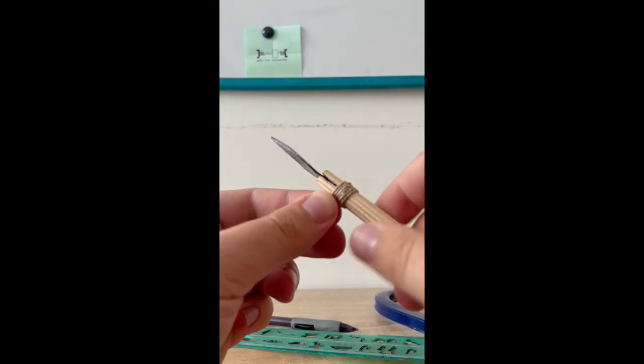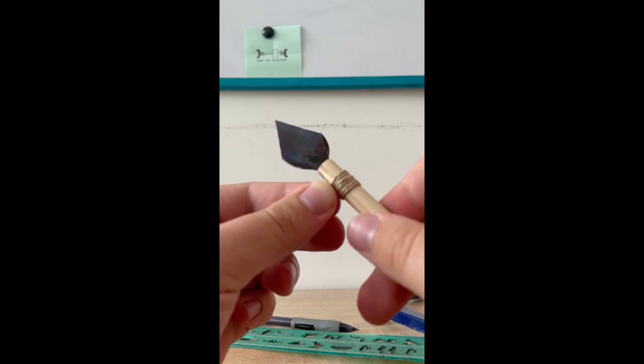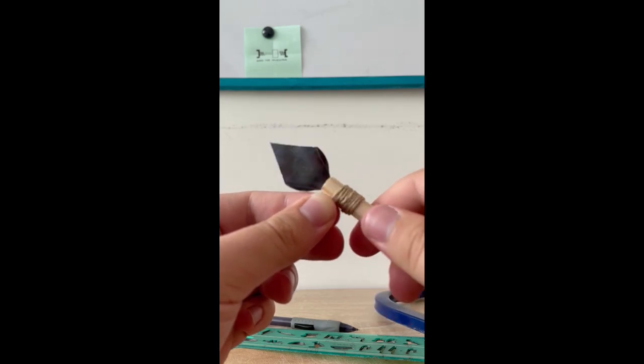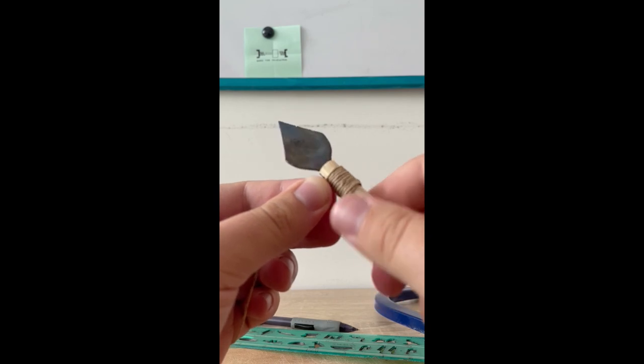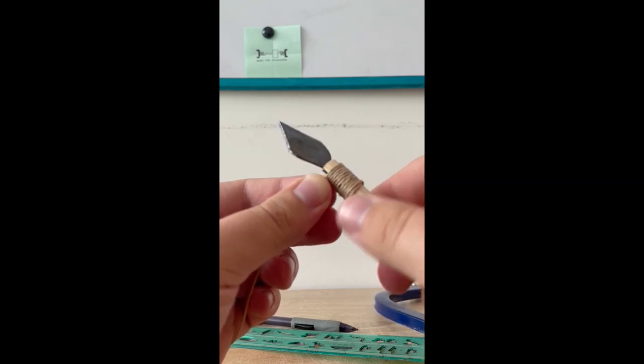Next I wrapped the arrowhead with string as well to prevent it from slipping out. It also had the benefit of giving the arrow an amazing tribal style.